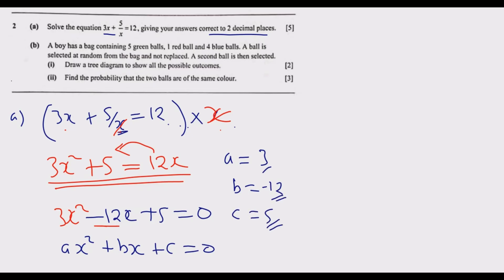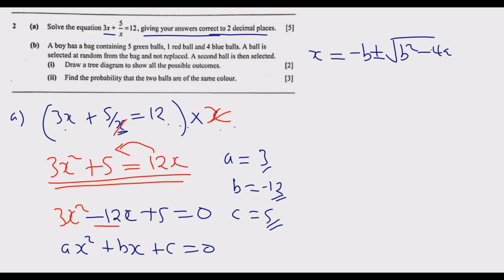Once you read the question saying 'correct to two decimal places,' you know the answers will be decimals and you should use the quadratic formula: x equals negative b plus or minus the square root of b squared minus 4ac, all over 2a.